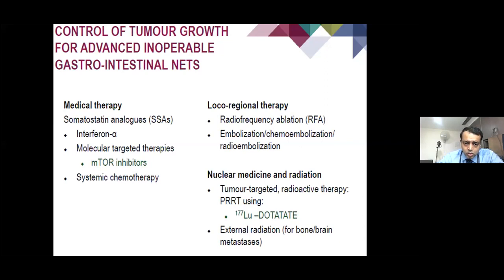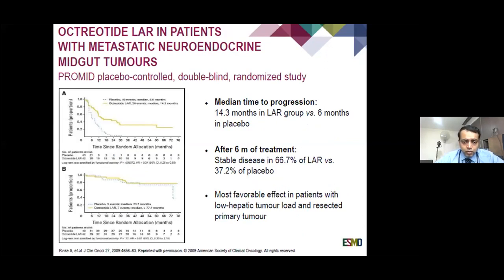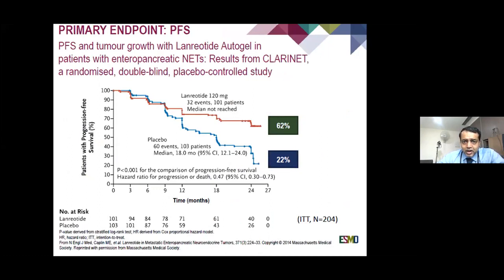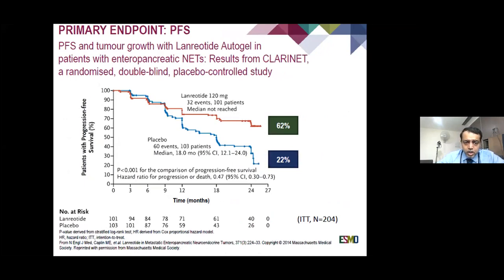Systemic therapy with mTOR inhibitors has also been studied. For mid-gut tumours, the PROMID study compared placebo to octreotide LAR therapy — long-acting somatostatin receptor analogue — where the median time to progression was increased from 6 months to 14.3 months, a JCO publication. Stable disease increased from 37% to 66%. The CLARINET study of lanreotide versus placebo showed the placebo arm had a median progression-free survival of 18 months. Lanreotide resulted in improvement of progression-free survival, and both drugs are approved.